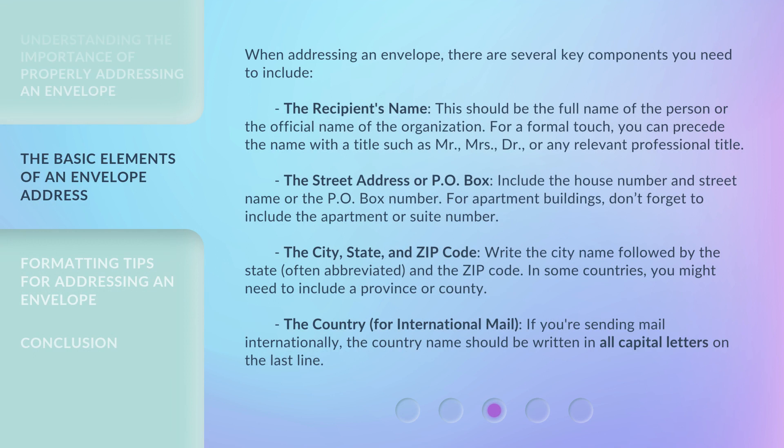When addressing an envelope, there are several key components you need to include. The recipient's name: this should be the full name of the person or the official name of the organization. For a formal touch, you can precede the name with a title such as Mr., Mrs., Doctor, or any relevant professional title. The street address or P.O. box: include the house number and street name, or the P.O. box number.